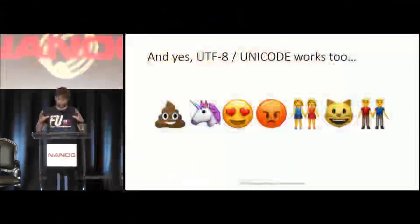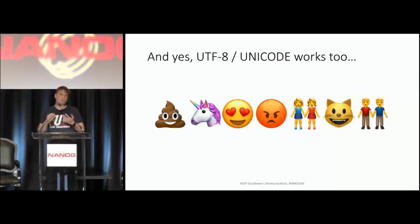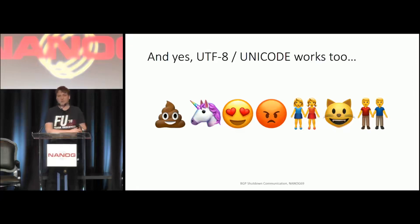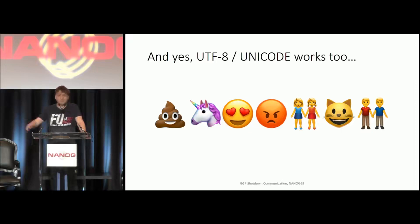The shutdown communication is 128 bytes maximum. This is to prevent visual spoofing — it would be annoying if half your syslog turned out to be one shutdown communication message from a malicious actor. By keeping the message short, it will be easier to parse for operations. That's it.